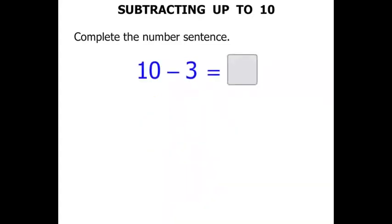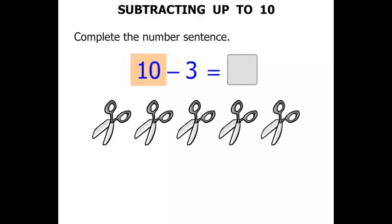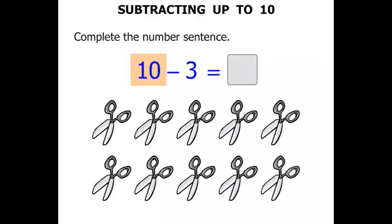The next one we have: 10 minus 3 equals something. Let's start with 10 scissors, 10 pairs of scissors. 1, 2, 3, 4, 5, 6, 7, 8, 9, 10. 10 pairs of scissors.